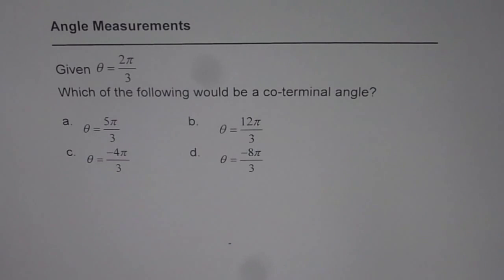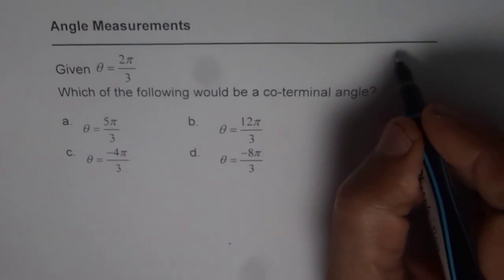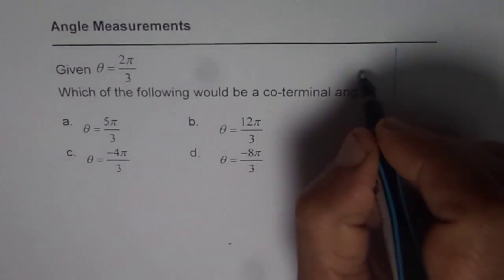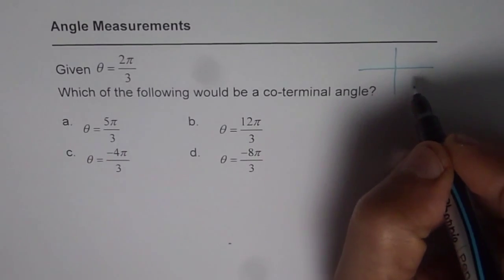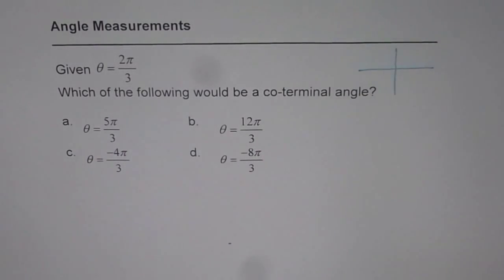Four choices are given to you. Now what is a co-terminal angle? A co-terminal angle is the angle which is 2π apart, as you can see.